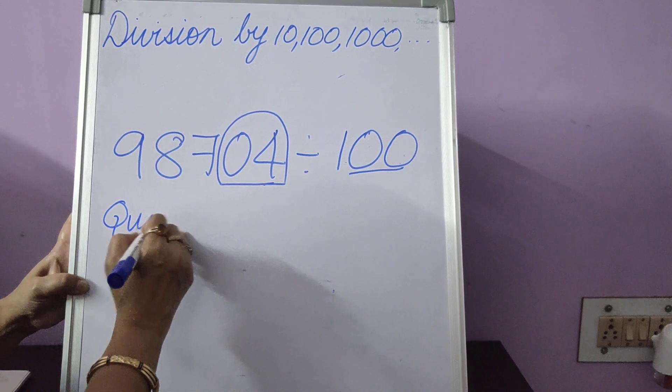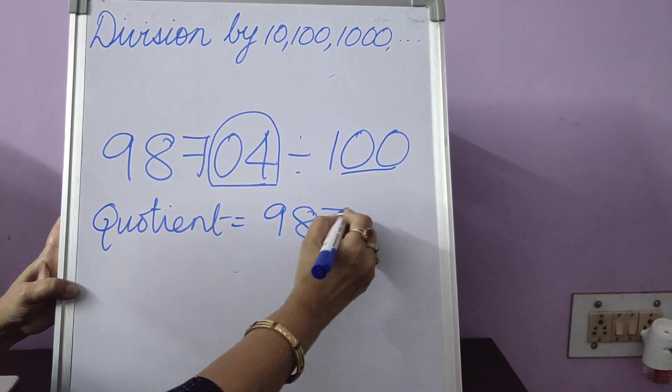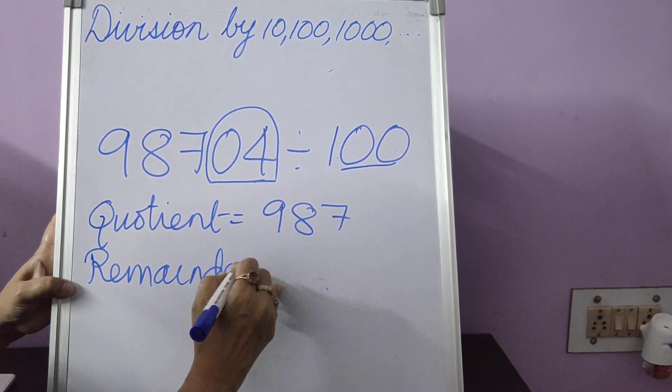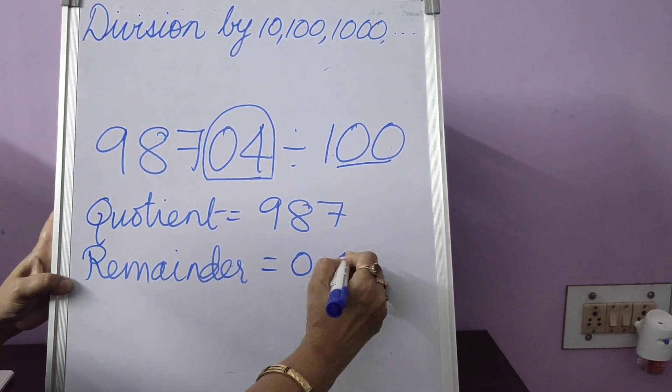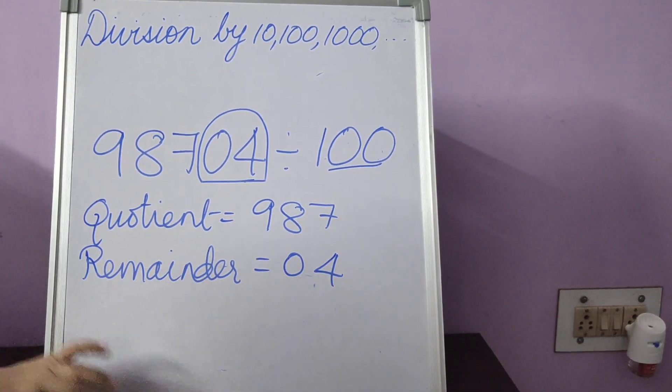What is outside is the quotient. Quotient is 987. Remainder is 04 or simply 4 also if you write, absolutely correct. Isn't it? So very easy.